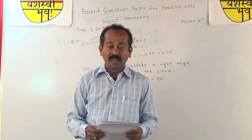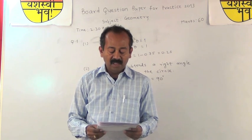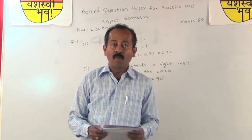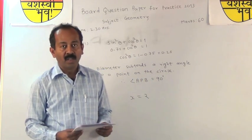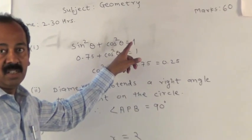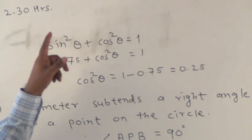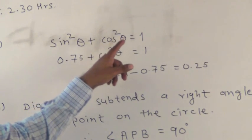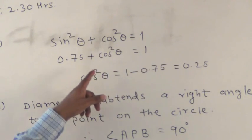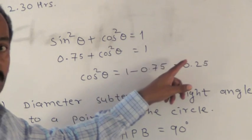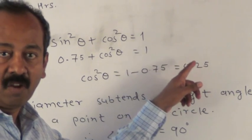Let us start with question number 1. If sin square theta is equal to 0.75, what is the value of cos square theta? Students, we know that sin square theta plus cos square theta is equal to 1. So, substituting the value of sin square theta, 0.75 plus cos square theta is equal to 1. So, cos square theta is equal to 1 minus 0.75 is equal to 0.25. This is the required value.